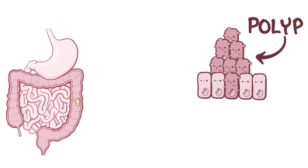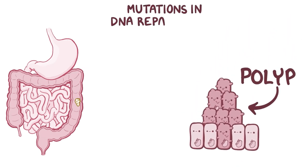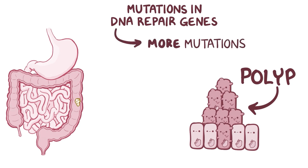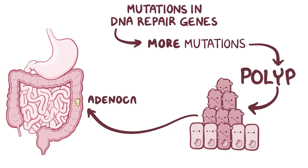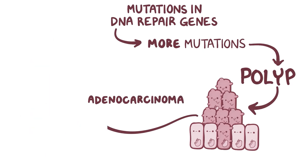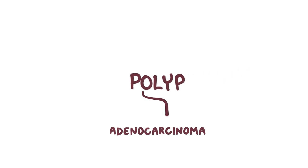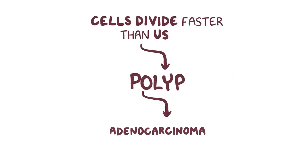Another well-known example are genetic mutations in DNA repair genes, which help fix up mutations in cellular DNA. When they're out of action, cells accumulate mutations and over time can develop into polyps, and eventually adenocarcinomas. So broadly speaking, adenocarcinomas are the malignant evolution of polyps, and polyps arise when cells start dividing faster than usual.